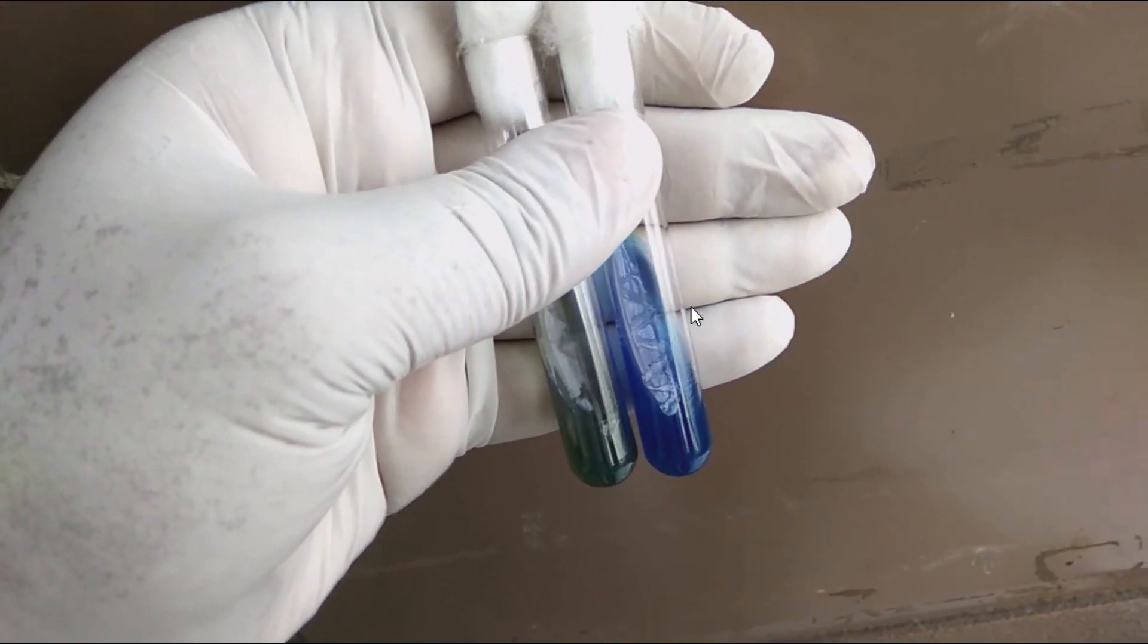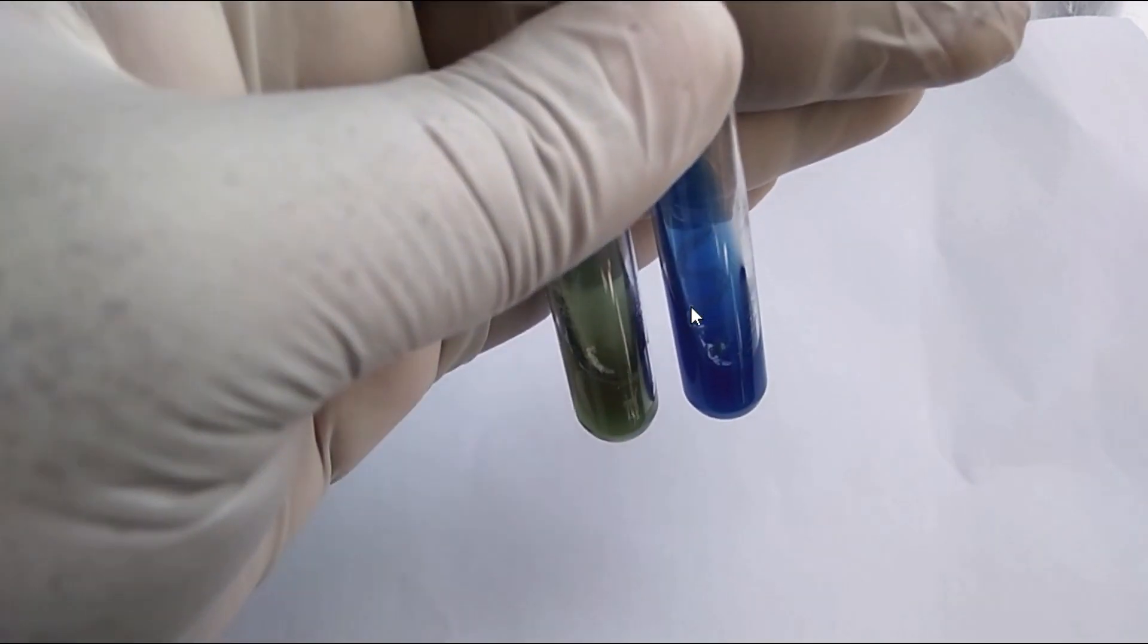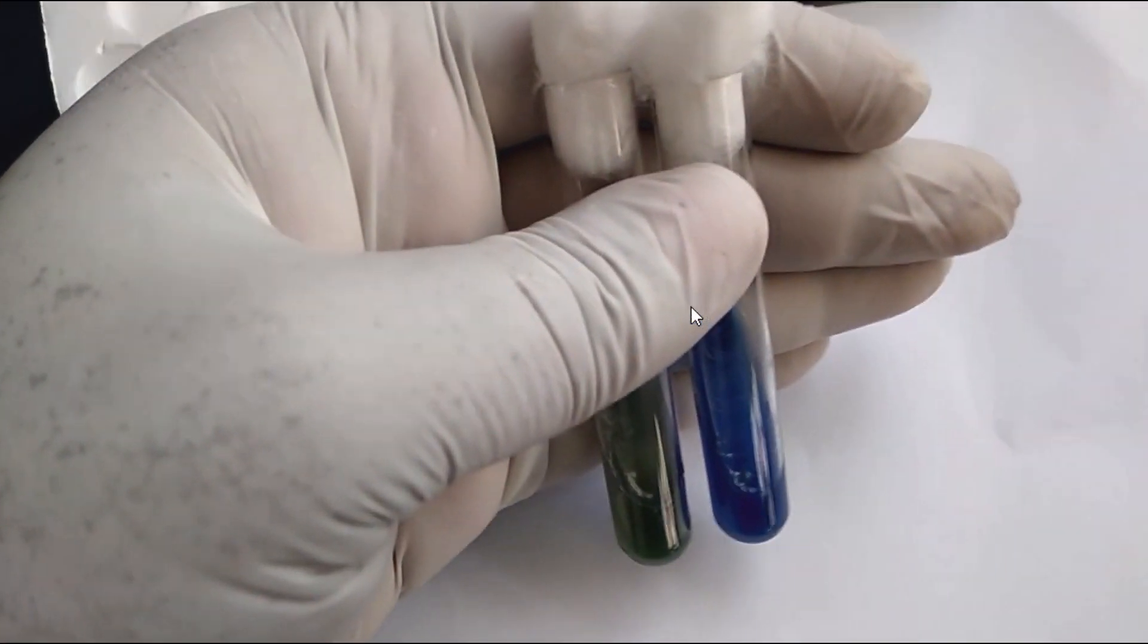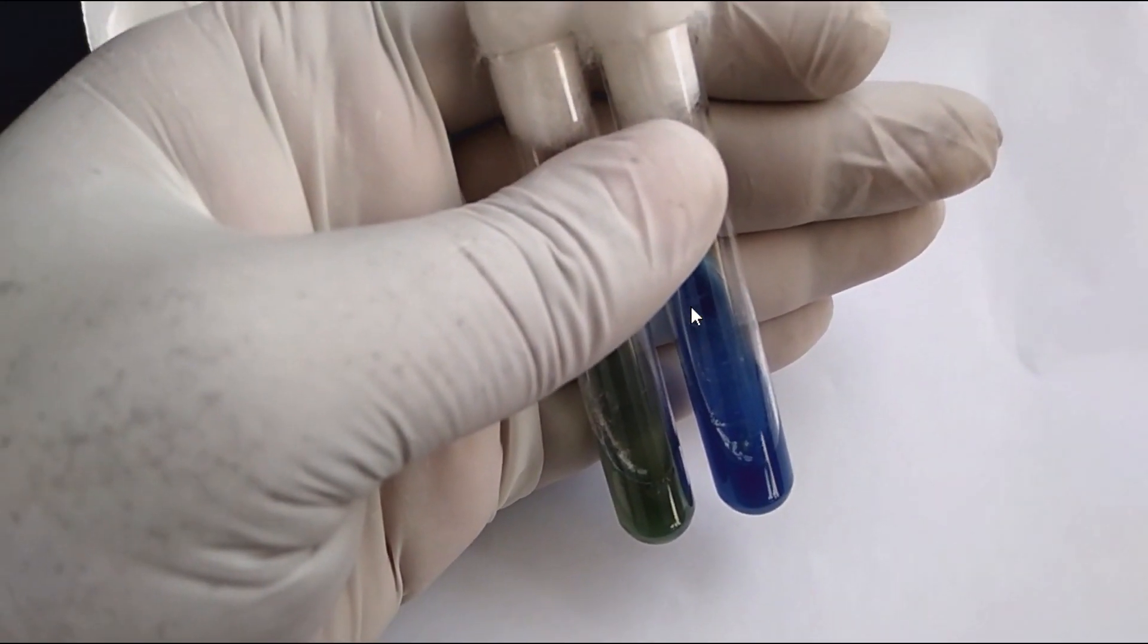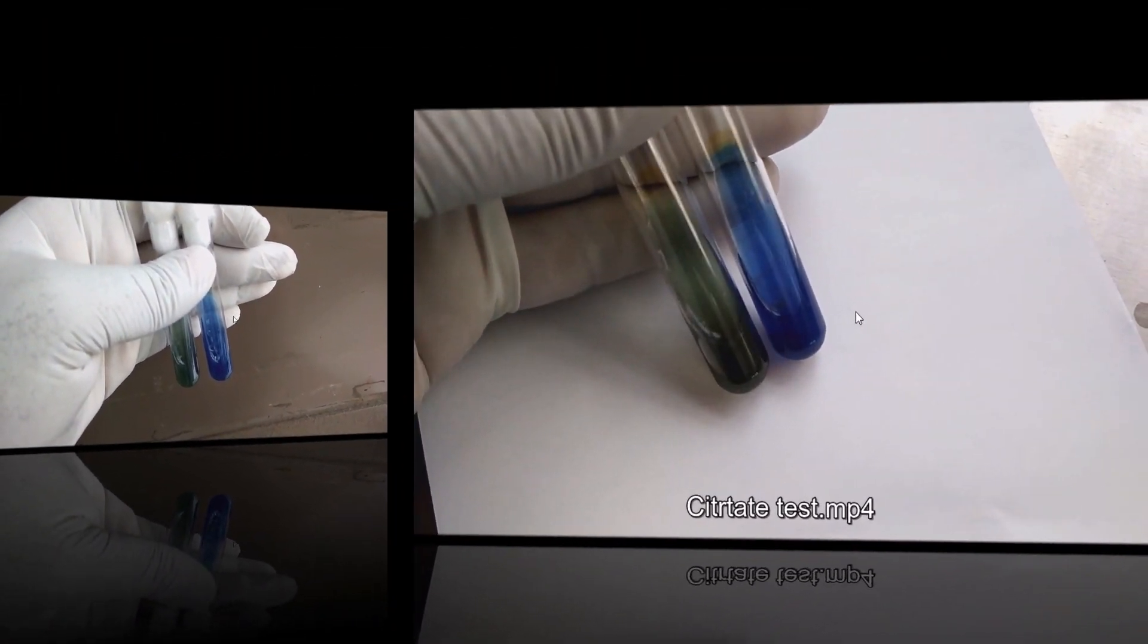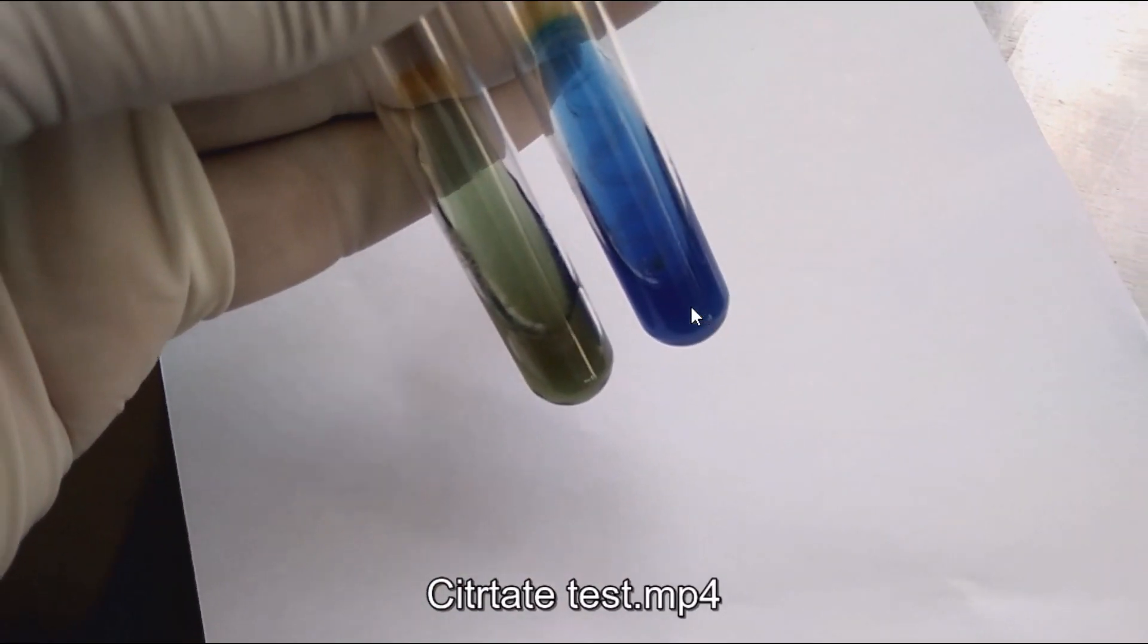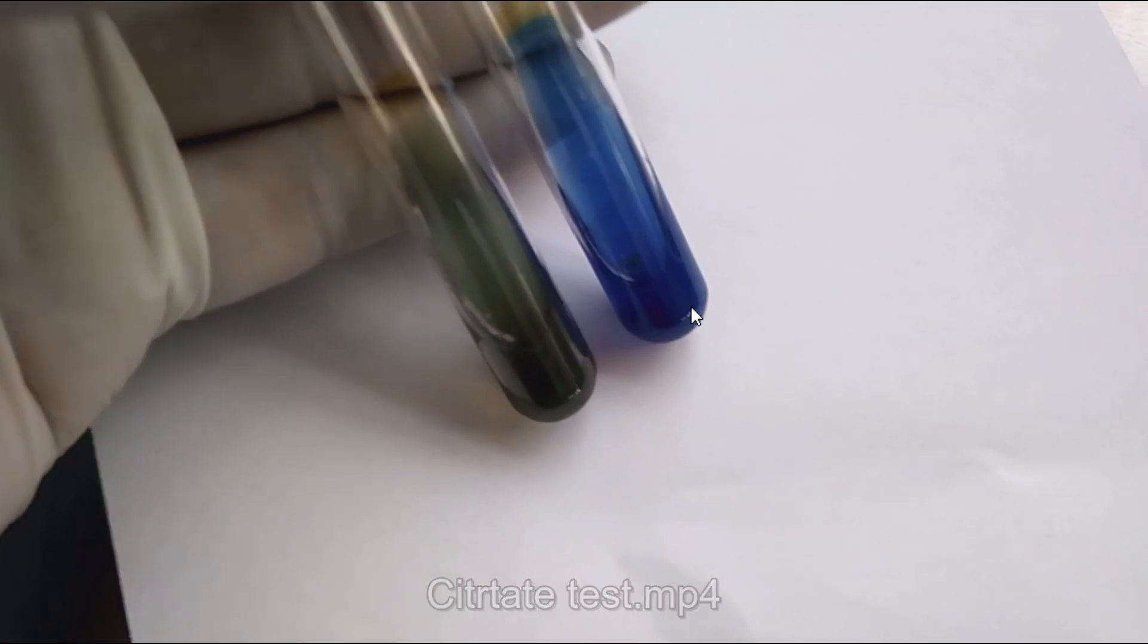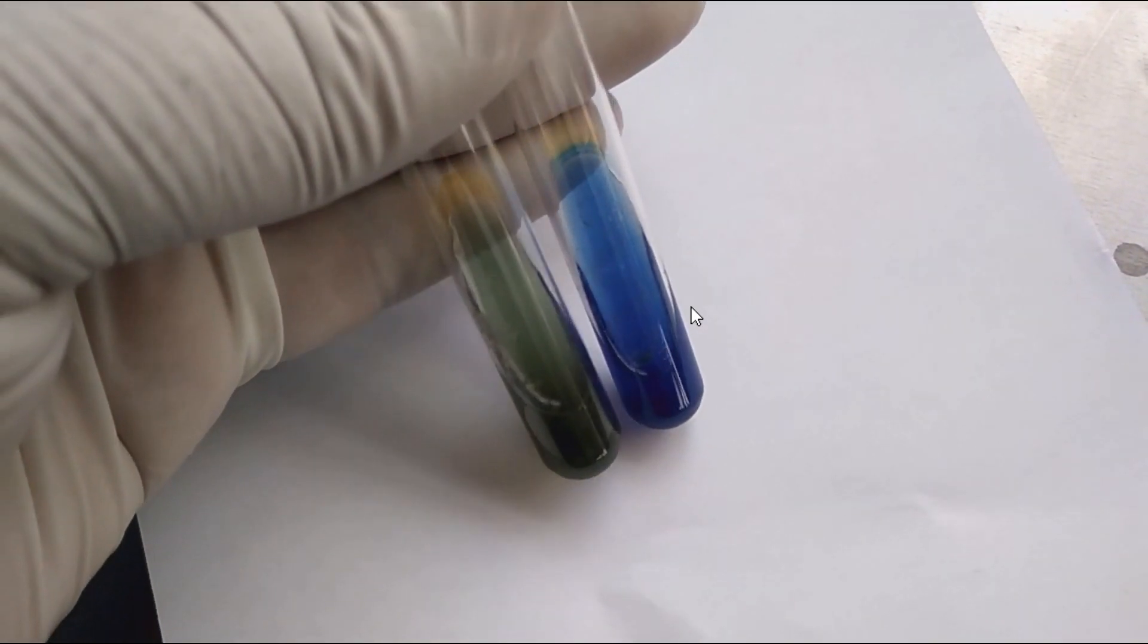Some other bacteria that are citrate positive include Citrobacter, Enterobacter, Serratia, Providencia, and some strains of Vibrio and Proteus.